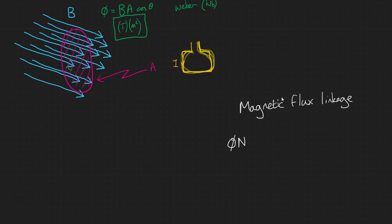There isn't a particular symbol for magnetic flux linkage, so we just write it as phi n. So therefore, phi n, the magnetic flux linkage, is equal to the magnetic flux density B multiplied by the area, multiplied by the number of turns on the coil, multiplied by cos theta.